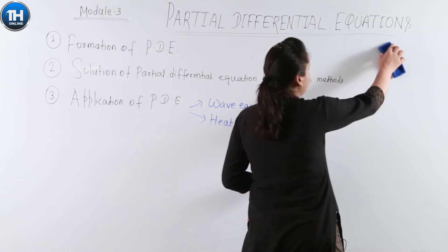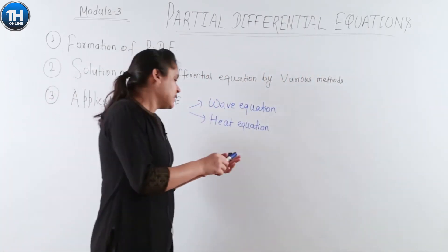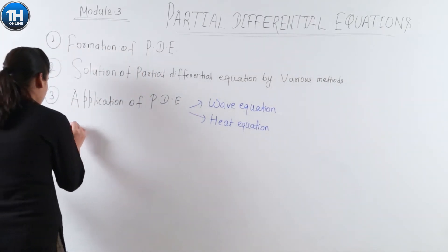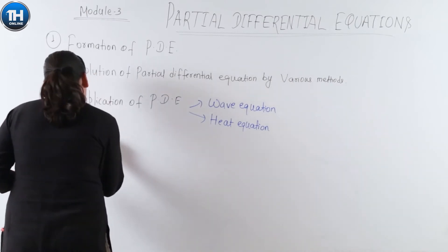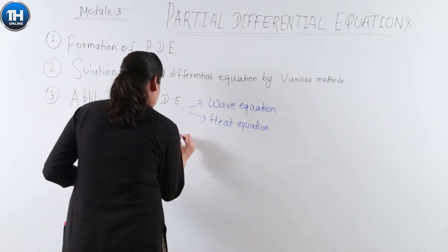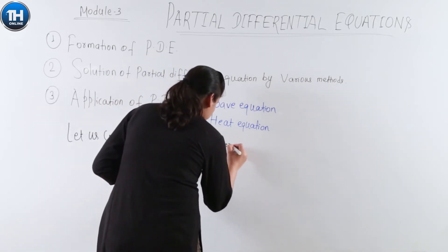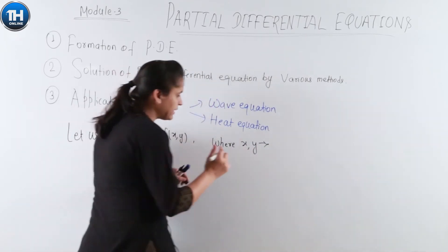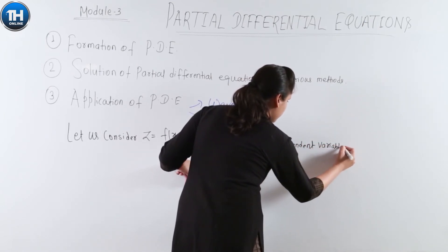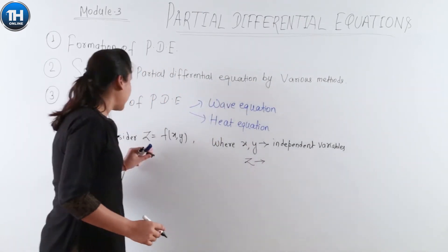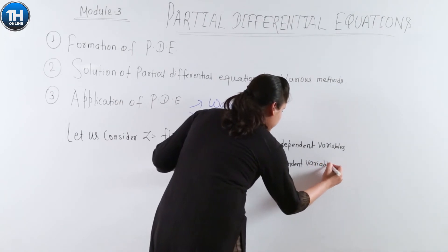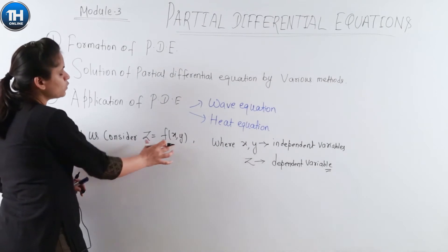Before that, let us study the notations — what is denoted by what in partial differential equations. Let us consider Z = F(X, Y), where X and Y are the independent variables, and Z is the dependent variable, since Z depends on X and Y. So Z is my dependent variable here.